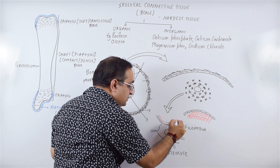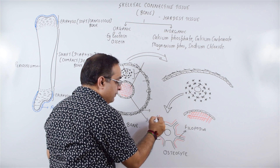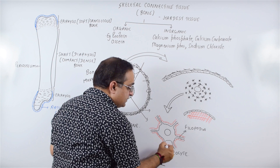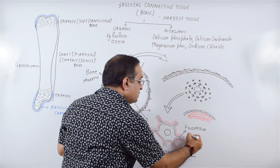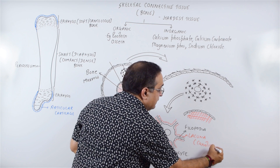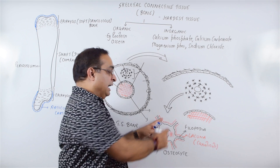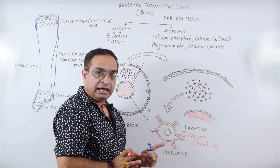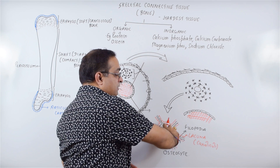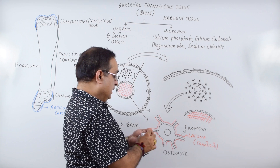An osteocyte is surrounded by a fluid-filled space called a lacuna. This fluid-filled space surrounds the osteocyte. The lacuna has channels called canaliculi, which are present surrounding the osteocyte and its protoplasmic processes.